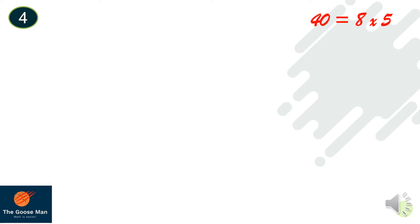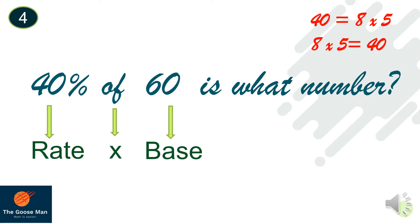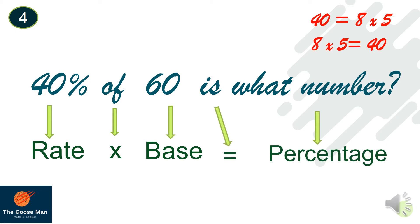Let's recall that 40 = 8 × 5, and also that 8 × 5 = 40. We will use this concept to translate the next example: 40% of 60 is what number? 40% is our rate because it comes before the word 'of.' 'Of' is multiplication, and 60 is our base because it comes after 'of.' The word 'is' equals the equal sign, and 'what number' is our percentage. For our symbols: rate is R, base is B, and percentage is P.